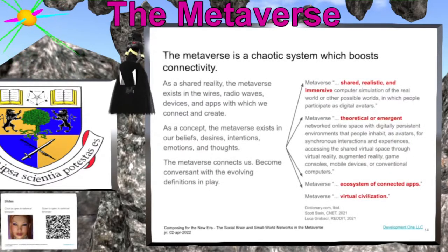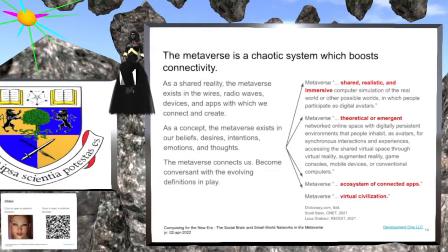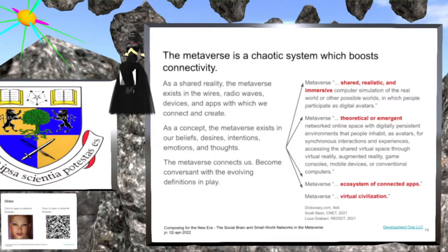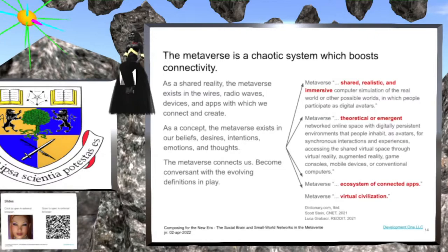The metaverse is a chaotic system which boosts connectivity. As a shared reality, the metaverse exists in the wires, radio waves, devices, and apps with which we connect and create. As a concept, it exists in our beliefs, desires, intentions, emotions, and thoughts. The metaverse exists conceptually, physically, and digitally — and it connects us. But its definitions vary. Become conversant with the multiple definitions of the metaverse now in play.